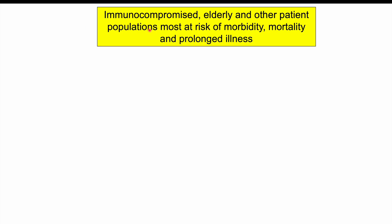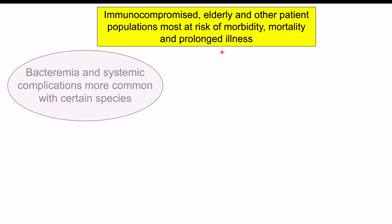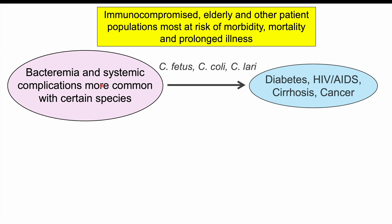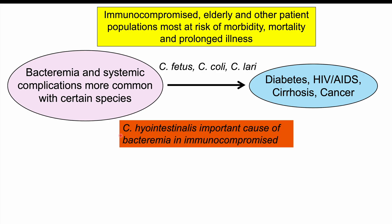In immunocompromised patients or those with poor immune function, there is most risk of morbidity, mortality, and prolonged illness. Bacteremia — bacteria present in the blood — can occur when Campylobacter passes through the intestinal mucosa into the bloodstream. This is more common with Campylobacter fetus, Campylobacter coli, and Campylobacter lari, and most common in patients with diabetes, HIV or AIDS, cirrhosis, and cancer. Campylobacter hyointestinalis is also an important cause of bacteremia in the immunocompromised.